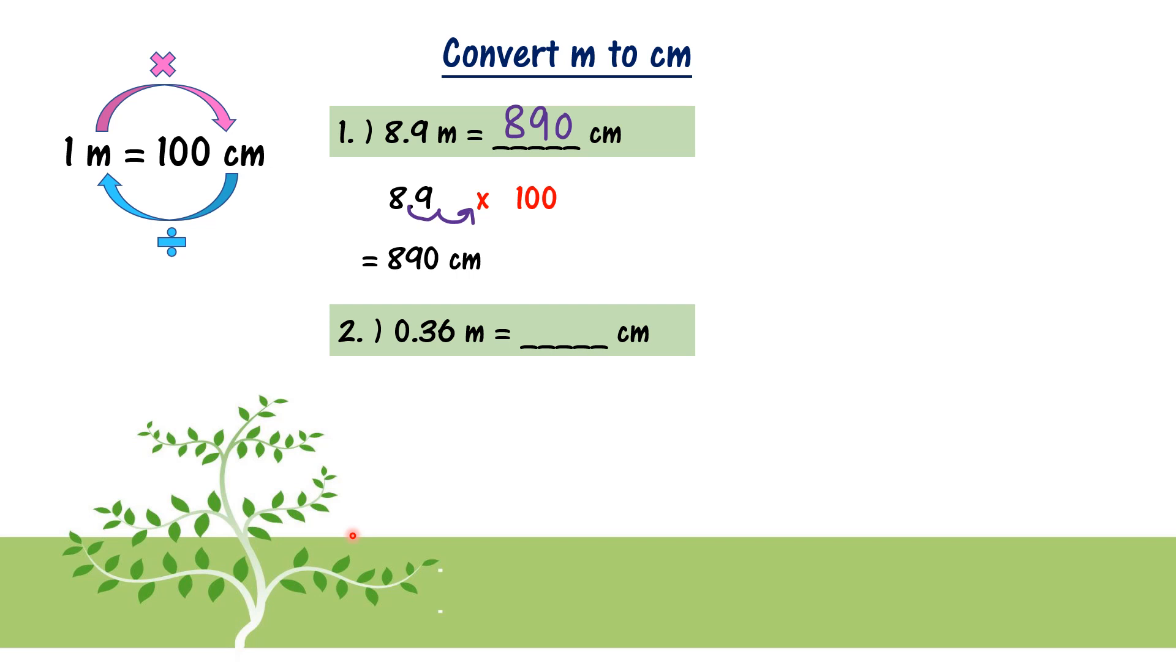Let's look at number two: 0.36 meter to cm. M to cm, times 100 also. So we write 0.36 times 100, and then move the decimal point one, two, two steps. So the answer is 36 cm.